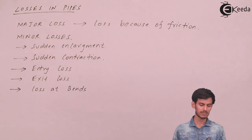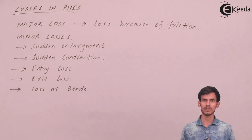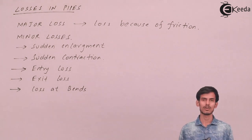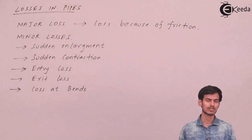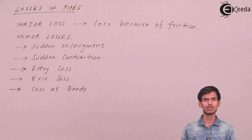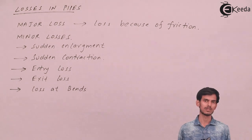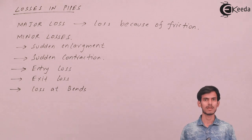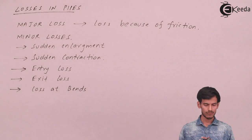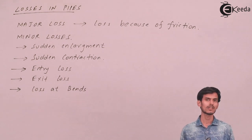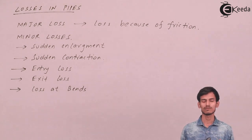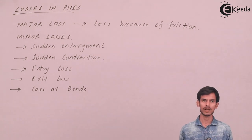Minor losses have five types altogether. First, loss due to sudden enlargement in pipe diameter. Second, loss due to sudden contraction in pipe diameter. Third, entry loss — when water enters from a tank into a pipe. Fourth, exit loss — when water exits from a pipe into a tank. Fifth, loss due to bends or attachments when there is a change in direction of the pipe. For each type there is a formula to calculate the head loss, and in this chapter we deal in terms of head rather than energy.